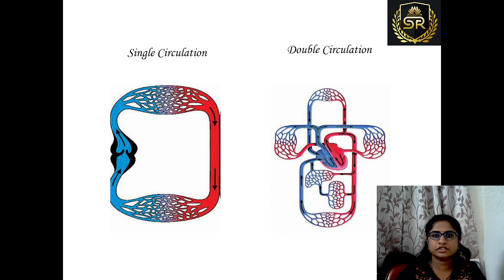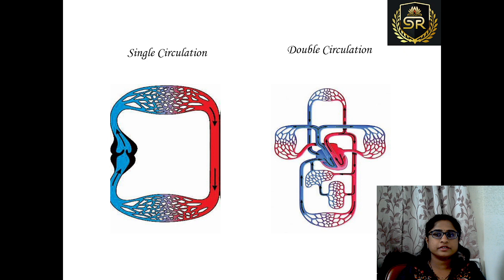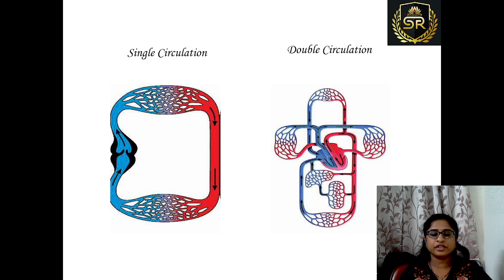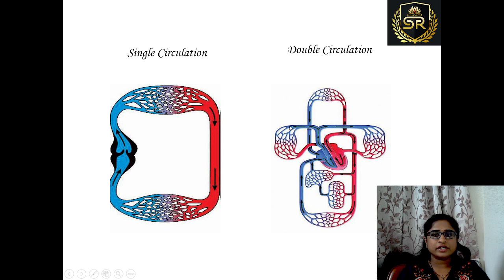In the last video, we discussed circulation — its importance and how it helps in the transportation of nutrients throughout the body. Oxygenated blood from the lungs travels to the heart and then to different parts of the body, to different cells and tissues. From there, deoxygenated blood comes back through the inferior vena cava and superior vena cava to the heart, which sends it to the lungs for purification. This cycle continues for every heartbeat — that is called circulation, and in human beings, it is specifically double circulation.